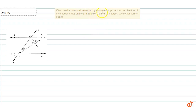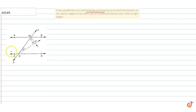The question is: if two parallel lines are intersected by a transversal, prove that the bisectors of interior angles on the same side of the transversal intersect each other at right angles. We have two parallel lines AB and CD, and a transversal FE that intersects both lines at points M and N. We have to prove this.